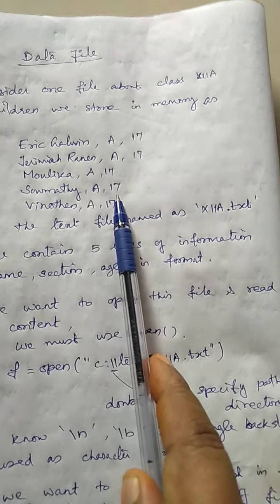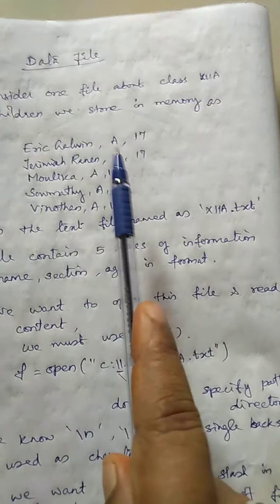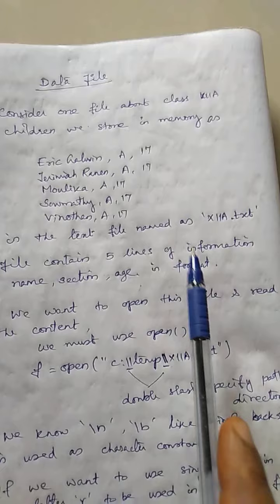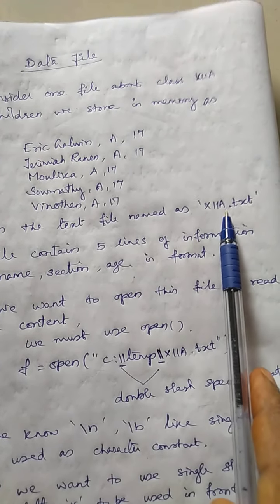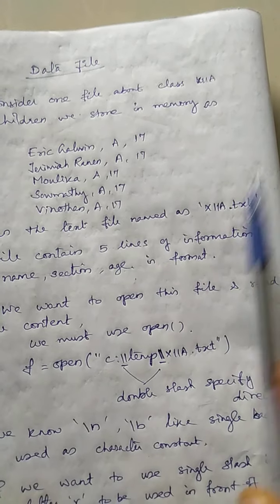Somathi, A, 17. Vinodhan, A, 17. Like we are storing the memory, we are storing the information in one text file. The name of the text file we can have it as what? 12A.txt. The file is stored in C colon temporary folder like we consider.